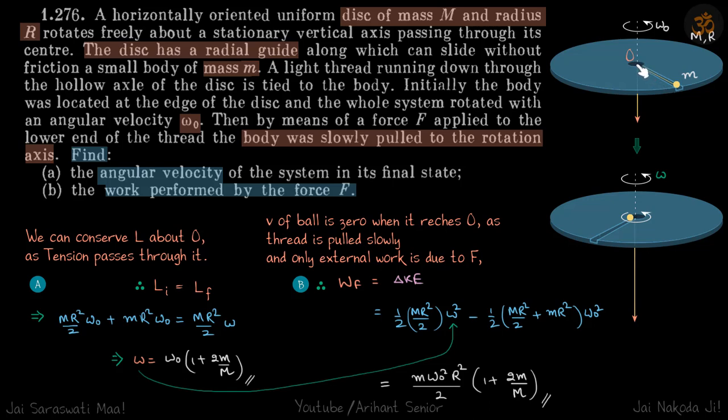When it's come to the very center, we need to find out what's the angular velocity of the system and what is the work performed by this force F. Now one more thing is given: that the body is slowly pulled, which means by the time this ball has come nearer to the center, its velocity is going to be zero, so it won't have any kinetic energy.